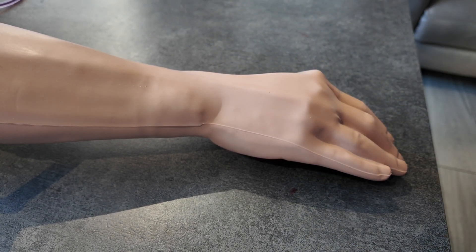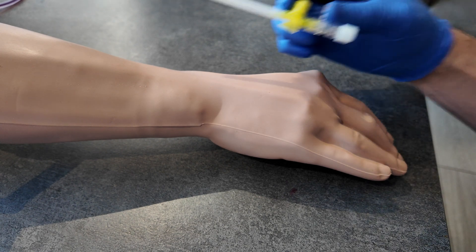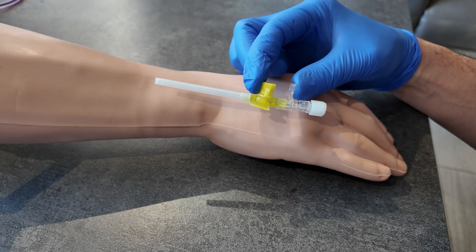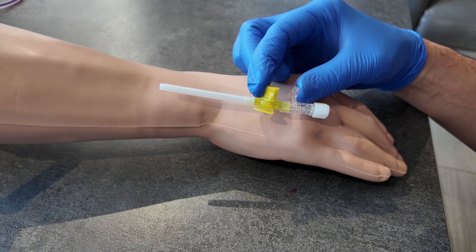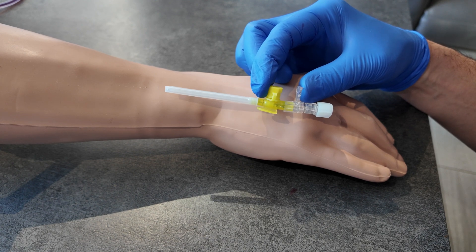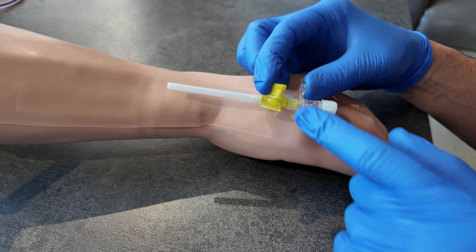We take our cannula, which in this case is a 24 gauge cannula. This is a Vasafix safety cannula from B. Braun, and you can tell it's 24 gauge because it's yellow.